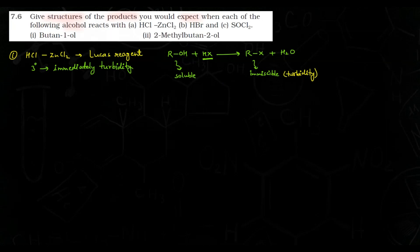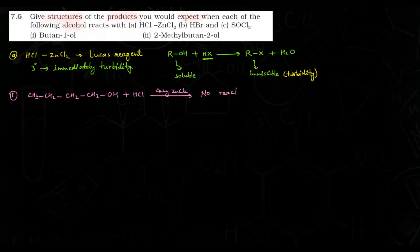Ab aapko batana hai ki jo do alcohols diye hue hain woh kaise react karenge. First one is butan-1-ol. Iska structure hai CH3-CH2-CH2-CH2-OH. Iski reaction karwani hai Lucas reagent ke saath. Jab aapne yahan par reaction karwai to yahan par koi reaction nahi hogi room temperature par.